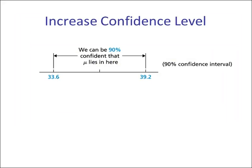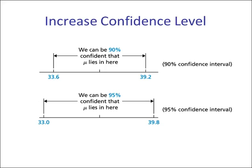Here is a visual: a 90% confidence interval for population mean mu, and moving to 95% shows the margin of error increases. We are more likely to capture the true mean, but the confidence interval is wider.